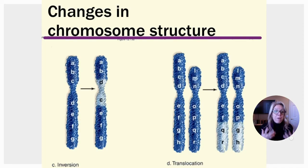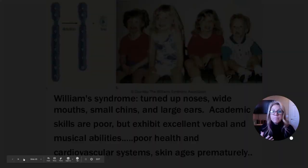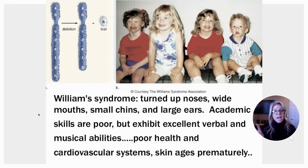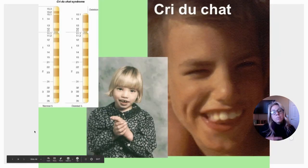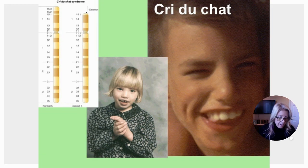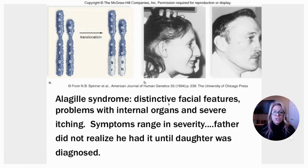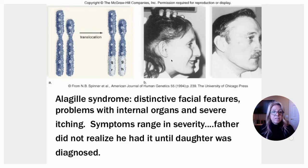These structural changes can cause minimal to severe problems. Williams syndrome results from a deletion and involves a pixie-like appearance — turned-up nose, wide mouth, small chin, large ears — along with poor academic skills but strength in the arts, poor cardiovascular health, and skin that ages prematurely. Cri du chat, meaning 'cry of the cat' in French, results from a missing segment of chromosome 5 and can cause intellectual disabilities. Alagille syndrome involves distinctive facial features, internal organ problems, and severe itching, with symptoms varying widely. In one case, a father didn't realize he had it until his daughter showed more advanced symptoms — this was a result of a translocation.